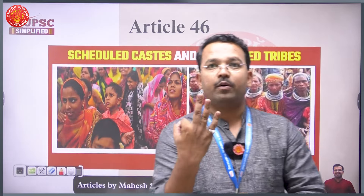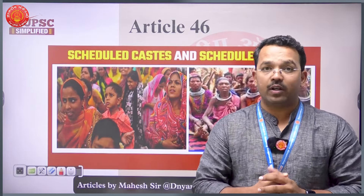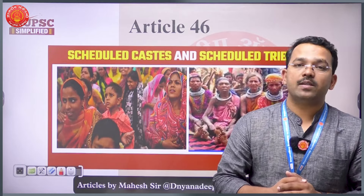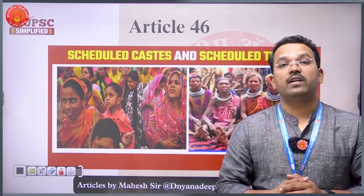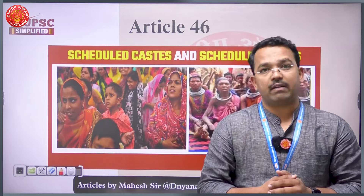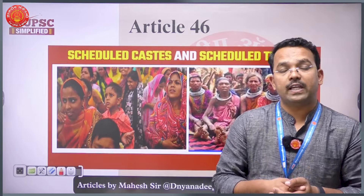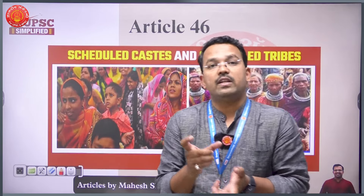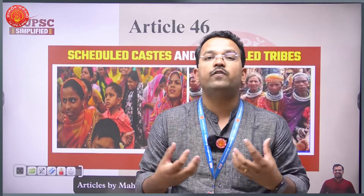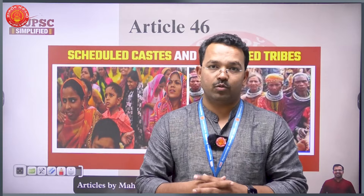Article 46 is basically about three important things. It is about scheduled caste, it is about scheduled tribes and it is about other weaker sections. It is not using the word 'other backward classes' — it is using the word 'other weaker sections.' That's why the scope of article 46 is open for everyone who is weaker in the eyes of the constitution.